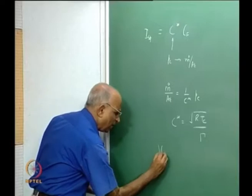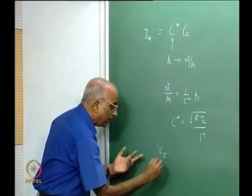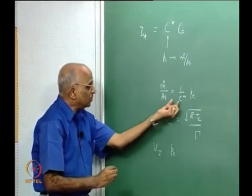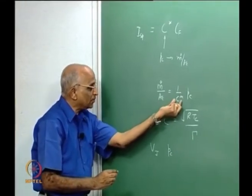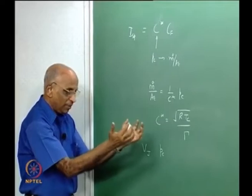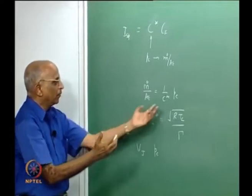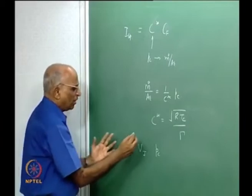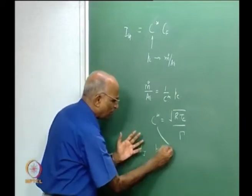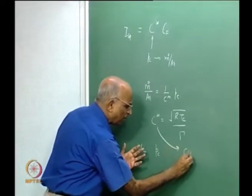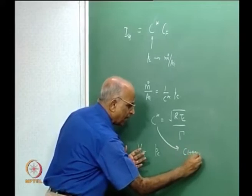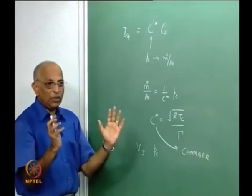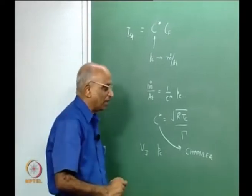To get a high value of Vj I need a high value of chamber pressure. Therefore c* tells you the capacity of whatever is in the chamber to generate high pressure. So c* is not a function of nozzle performance, but rather how well a chamber can build up high pressure.